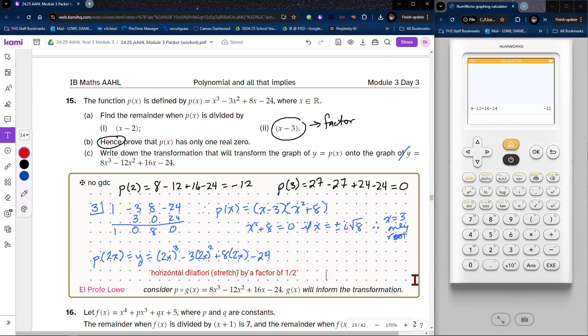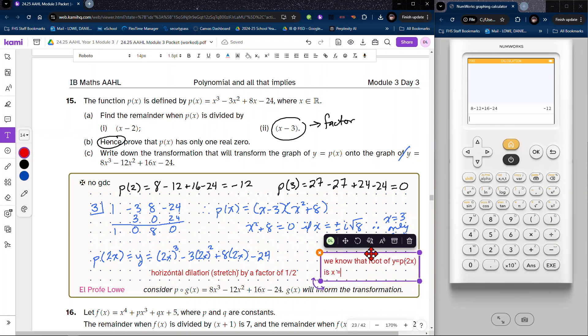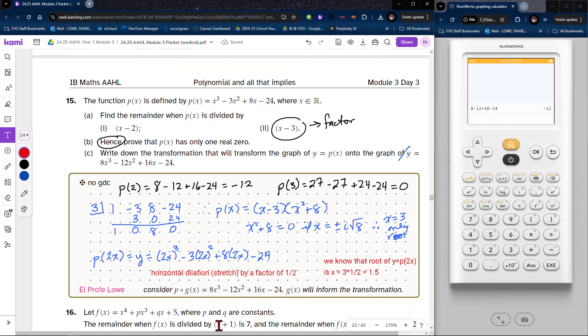So the root of our new function would be one half. It doesn't ask us, but we do know that information. So we know that root of y equals P of 2x is x equals 3 times one half, which is going to be 1.5. So we're not asked that information, but it's useful to know.